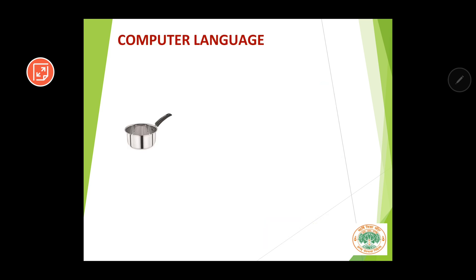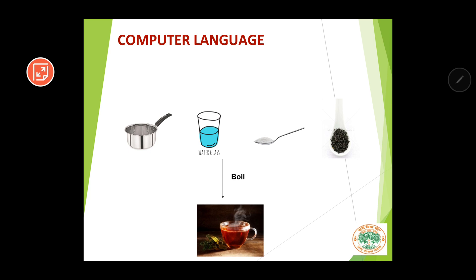Let us move forward and understand the concept of program. Before going into the technical details, let us understand how tea is made. For that you will require a saucepan, some water — put the water in the saucepan — then some sugar and some tea leaves. Put everything in the saucepan, boil it, and you will get a cup of hot red tea. While making this tea, we have followed some steps.